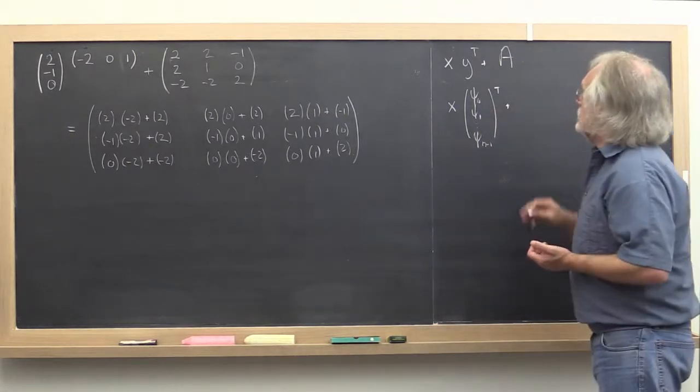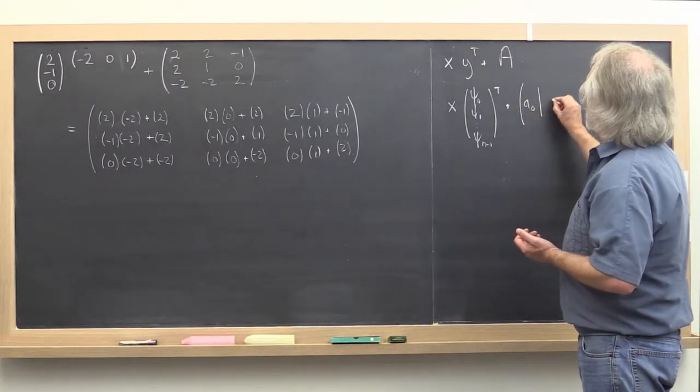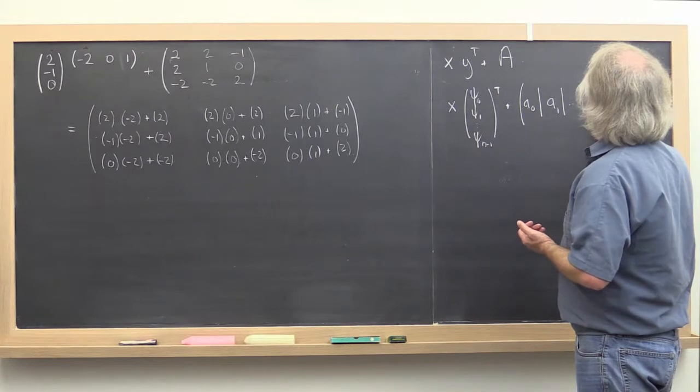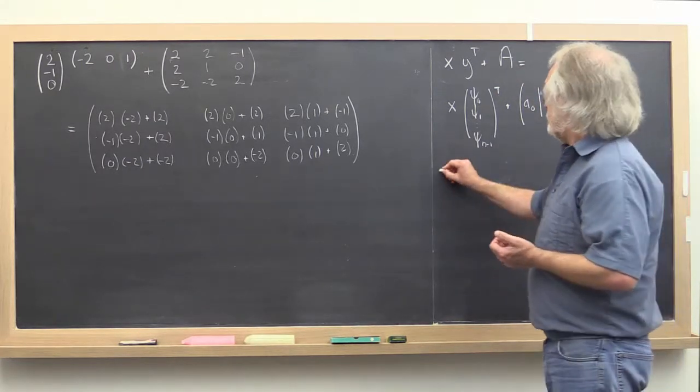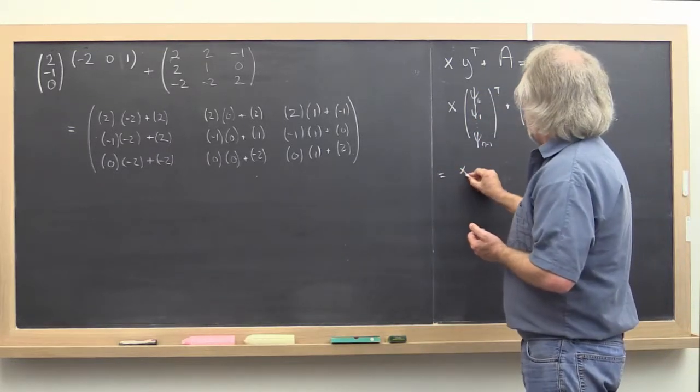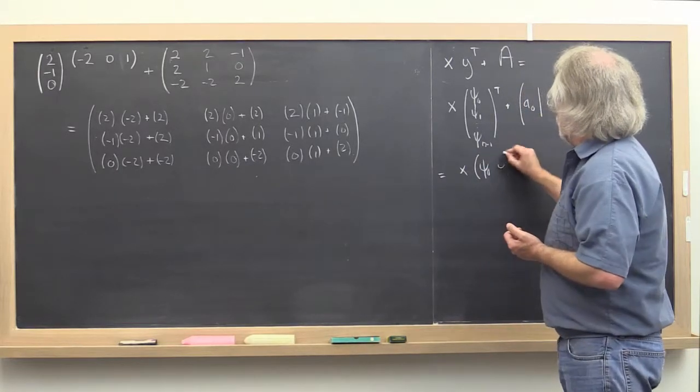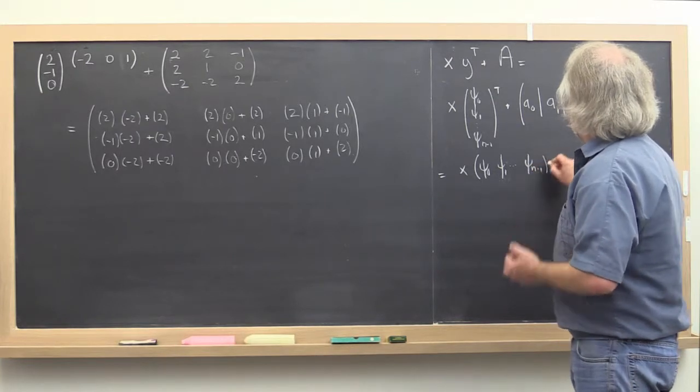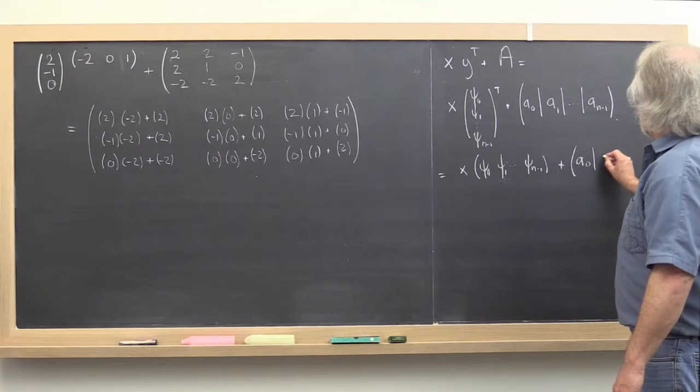We want to add that to matrix A, which we're going to partition by columns. That's the same as transposing this, so you get x times the row vector psi 0, psi 1, through psi n minus 1, which you add to matrix A partitioned by columns.